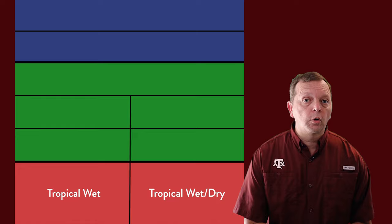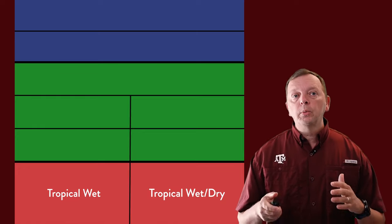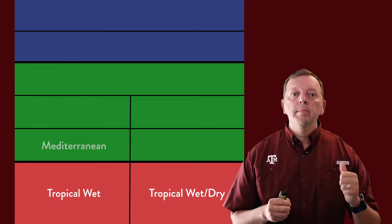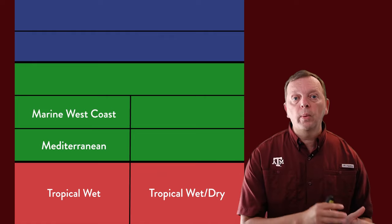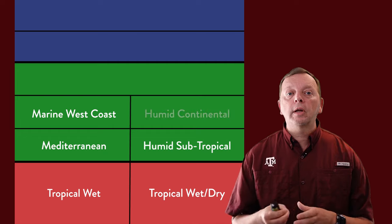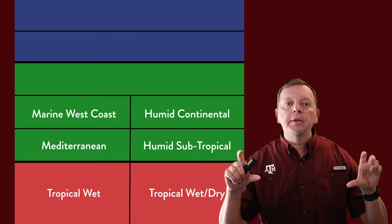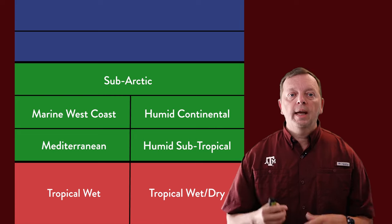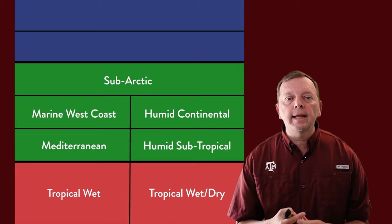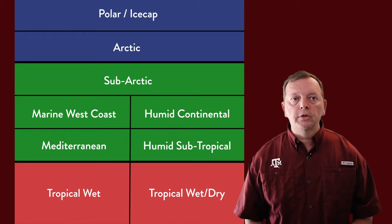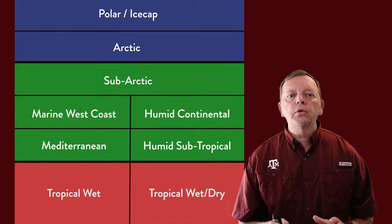In the low latitudes, we find tropical wet and tropical wet dry. As we go into the middle latitudes, we find five climates: the Mediterranean and the marine west coast on the west side of a continent, and then on the east coast, we find humid subtropical and humid continental. At the top of the temperate latitudes, we find the subarctic climates. And as we approach the poles into the high latitudes, we find two climates — the arctic and the polar climates. So those are the nine we can classify based upon latitude.